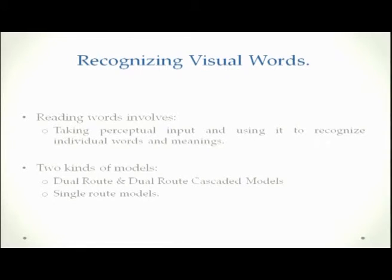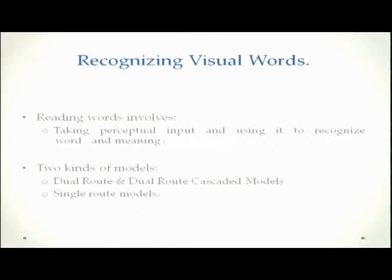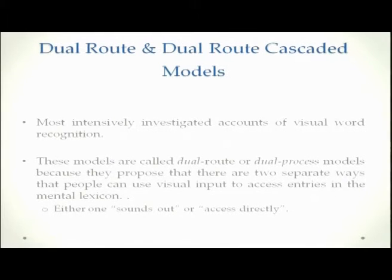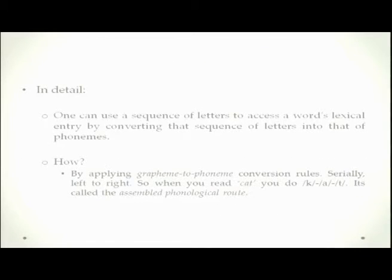Let us now move to recognizing visual words. In the last lecture I was talking about reading using eye movements, mostly about reading longer sentences. In this lecture I am spending time on reading individual words. Individual word reading involves taking a perceptual input and using it to recognize a word and its meaning. There are two kinds of models: dual route models and single route models.